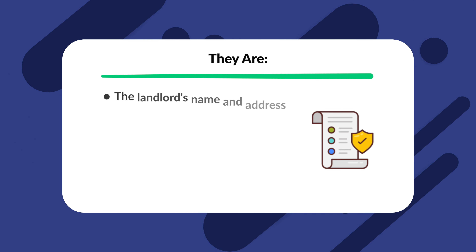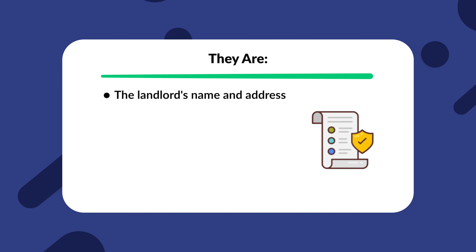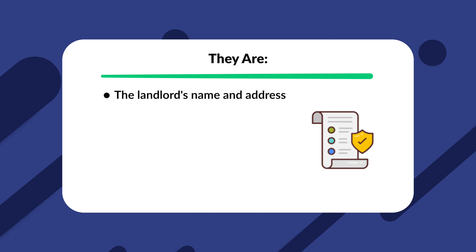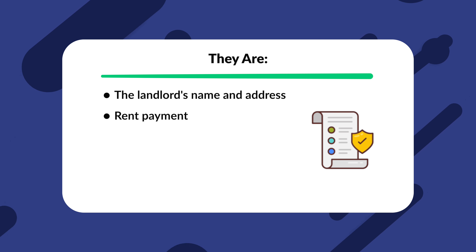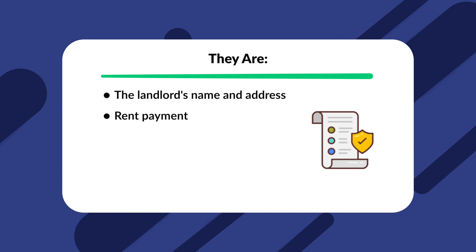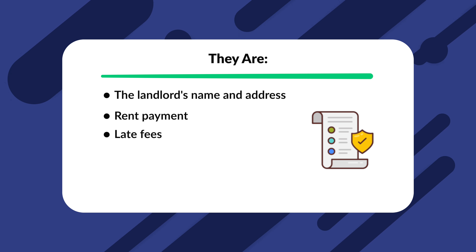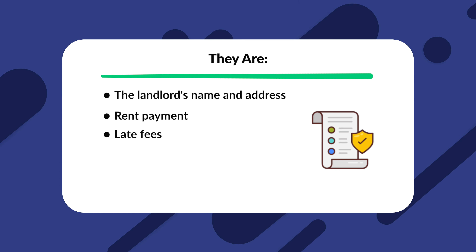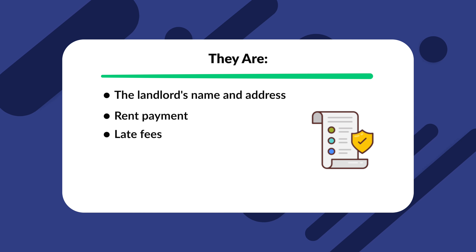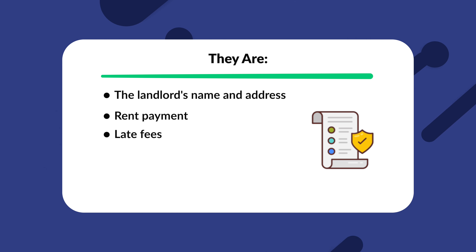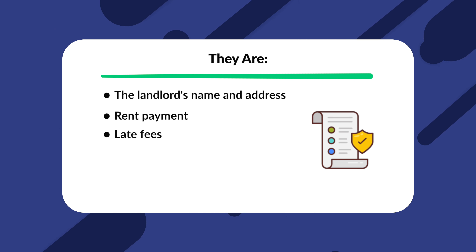What to include? According to state laws, there are certain elements that you'll have to add to your rental contract. They are the landlord's name and address — this is important for the issue of legal notices — rent payment. Your rental agreement must include the monthly rent and when the rent is due each month. Late fees: landlords must also provide information about fees charged for late payments and bounced checks. According to Arkansas law, there are no restrictions on the fees that landlords can charge.